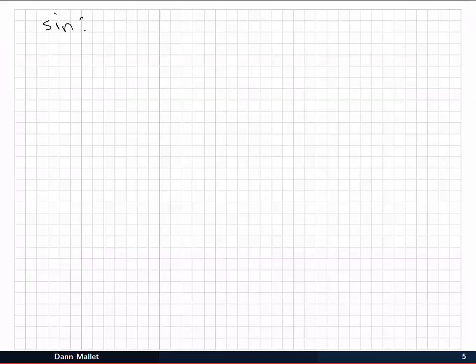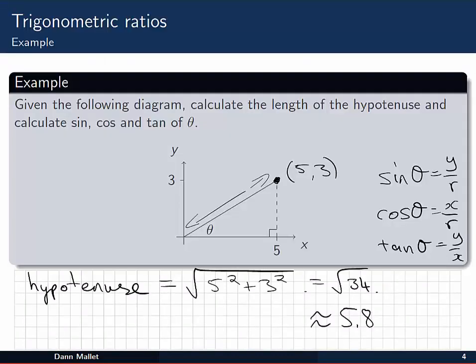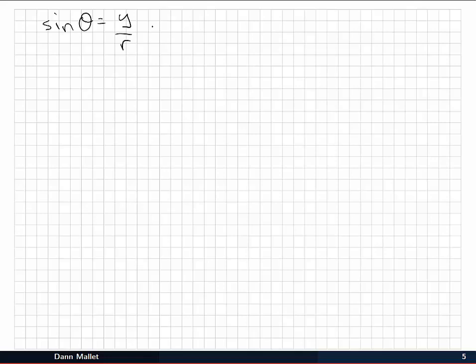So sine of theta is y over r. Remember that y was 3, and r, the hypotenuse, was the square root of 34. And we can leave it like that, or you can use the decimal value if you like, and get an approximation.